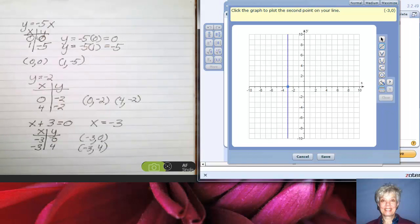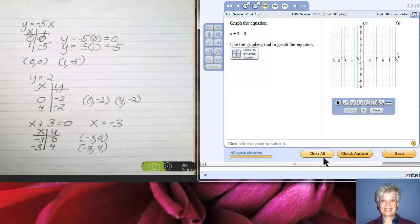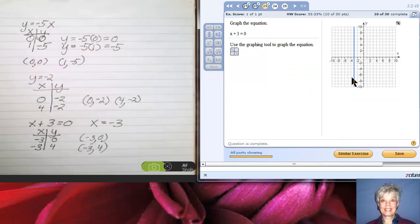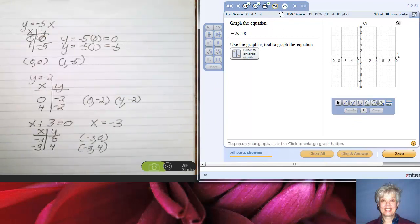And negative 3, 4. So x is negative 3 and y is 4. Click. Now I've got a line. I save my line, I check. Yes! This is the vertical line x equals negative 3. What else is waiting for us?